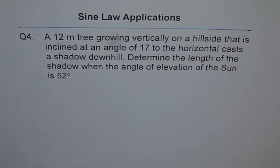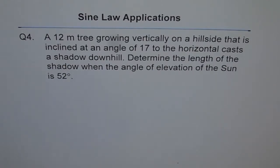Sine law applications, Question 4. A 12 meter tree growing vertically on a hillside that is inclined at an angle of 17 degrees to the horizontal casts a shadow downhill. Determine the length of the shadow when the angle of elevation of the sun is 52 degrees.